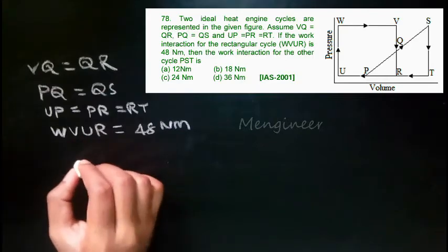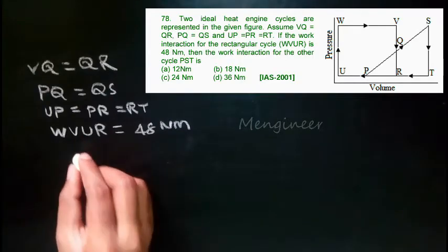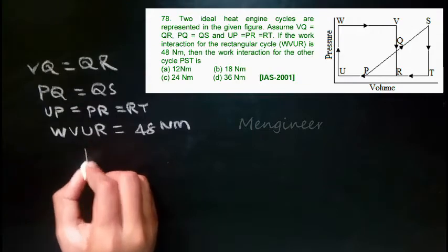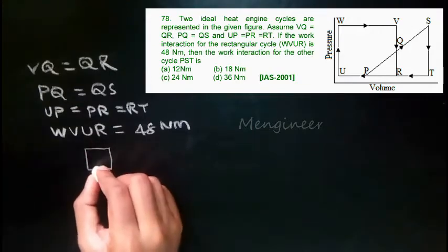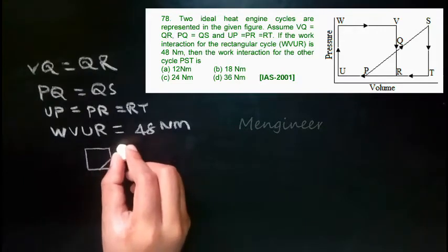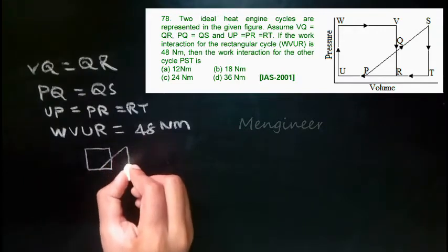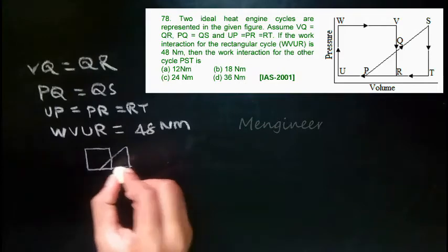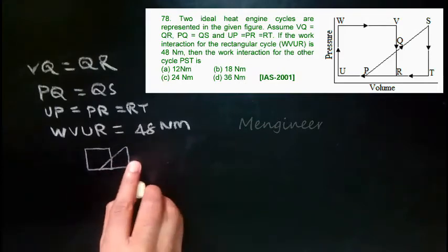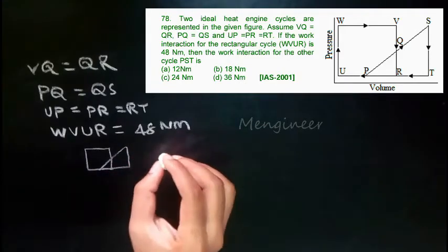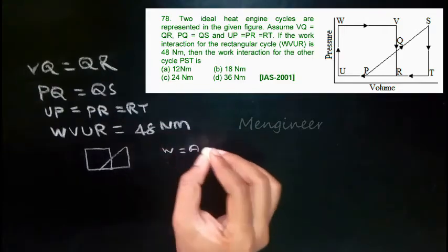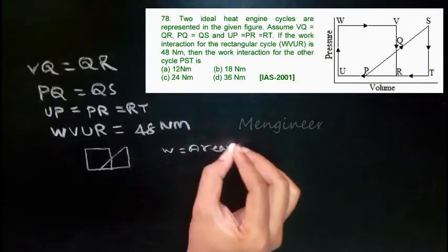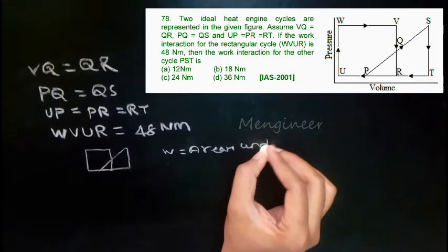First, reading the given data. This is the given problem, I'm just drawing it here. In this question, the work interaction for the rectangle, that is W_VUVUR, is given. We have to find the work interaction for the triangle.